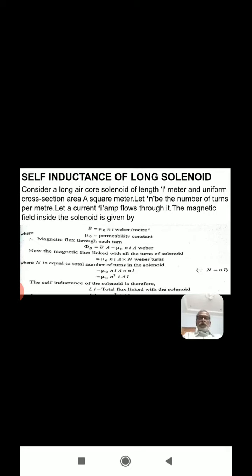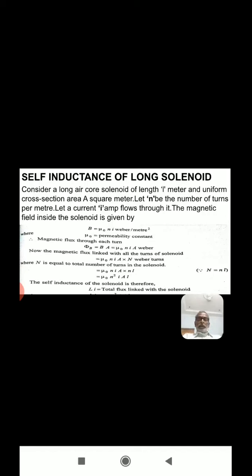Consider a long air core solenoid of length L meters and uniform cross-sectional area A square meters. Let small n be the number of turns per meter, and let a current I amperes flow through it. The magnetic field inside the solenoid is given by B is equal to mu naught n i, in tesla, where mu naught is the permeability constant. The magnetic flux linked with all the turns of the solenoid — the magnetic flux through each turn is phi_B equal to B times A equals mu naught n i A.